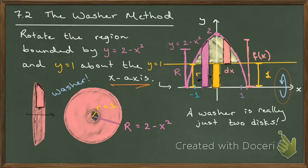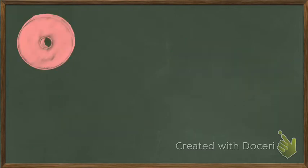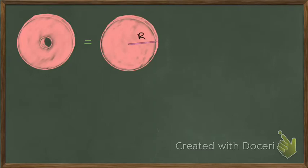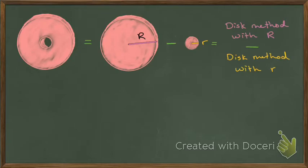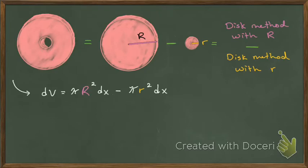So we really do treat this like two disks. A washer is essentially the same as taking a big disk with capital R as the radius and taking away a little disk with little r as the radius — I'm actually punching that hole using the disk method. Both together: the disk method with capital R minus the disk method with little r. So the representative volume element dV is the disk method with big R minus the disk method with little r.